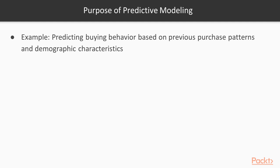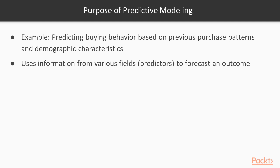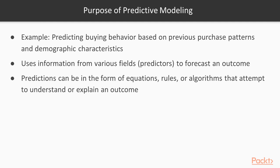Predictive modeling is the most common type of modeling out there. For example, we may be trying to predict buying behavior based on previous purchase patterns and demographic characteristics. The main idea is that you're trying to predict some kind of outcome using information from various fields — called predictors, or independent variables — to forecast a target or dependent variable.